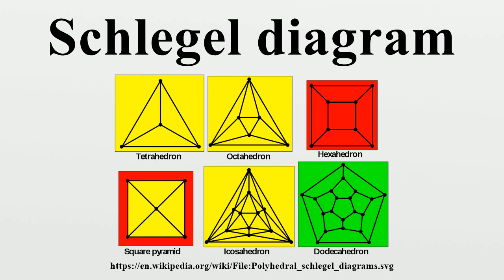It is always possible by suitable choice of the center of projection to make the projection of one face completely contain the projections of all the other faces. This is called a Schlegel diagram of the polyhedron. The Schlegel diagram completely represents the morphology of the polyhedron.